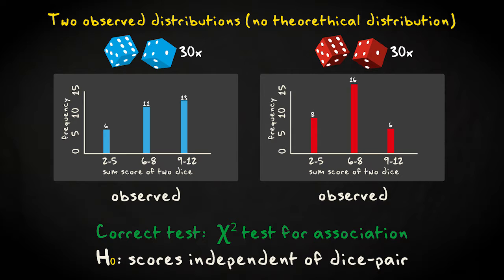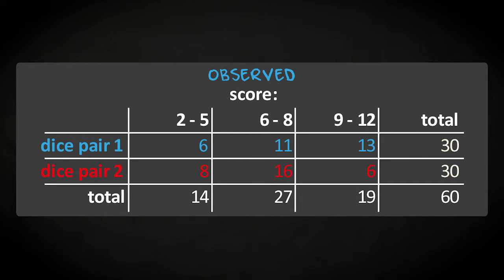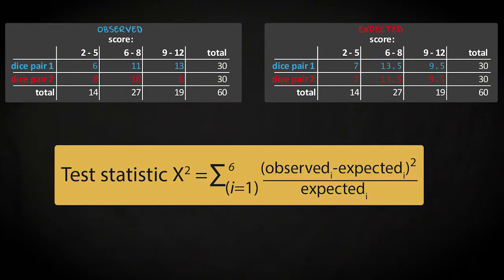To conduct the test for the two pairs of dice, we would place the two distributions in a cross table, then calculate the marginal distributions, and on the basis of these marginal distributions calculate the expected frequencies for each cell. Applying the equation for the test statistic to this cross table, the chi-squared statistic turns out to be 3.8, with a p-value of 0.15.